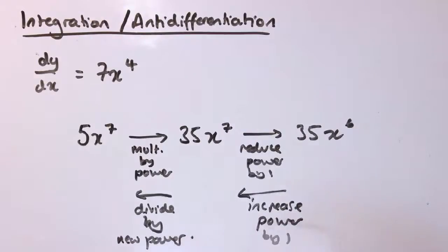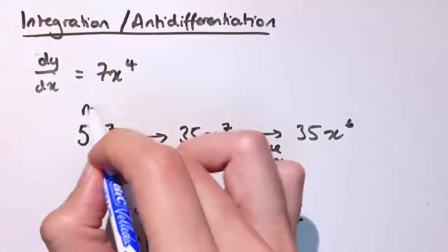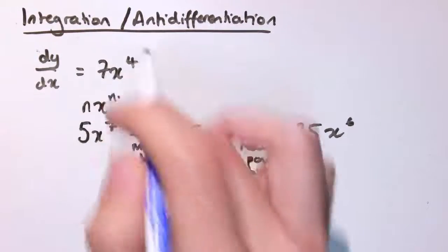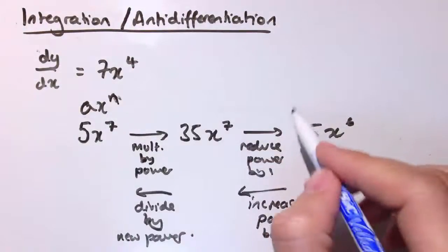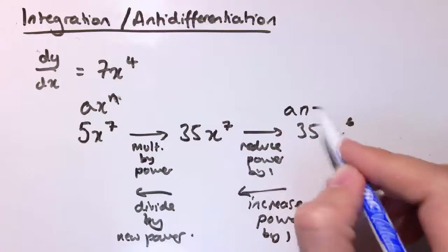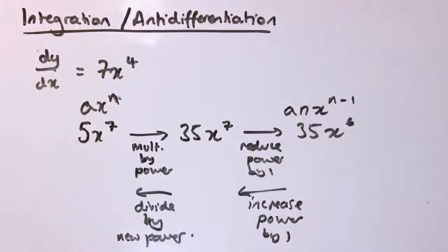So, when I have ax^n, then when we differentiate that, we get anx^(n-1), that's what we found before.